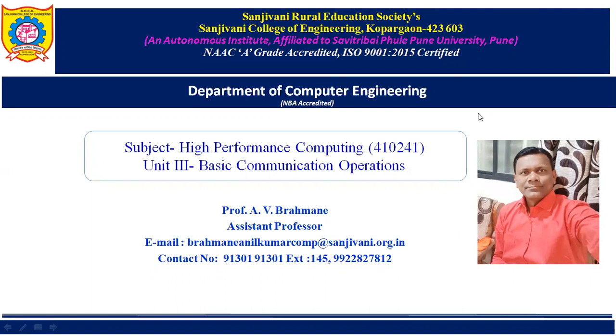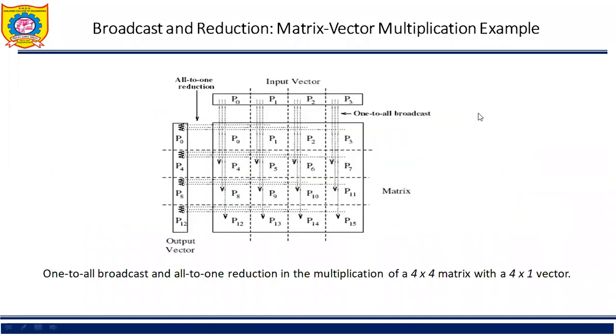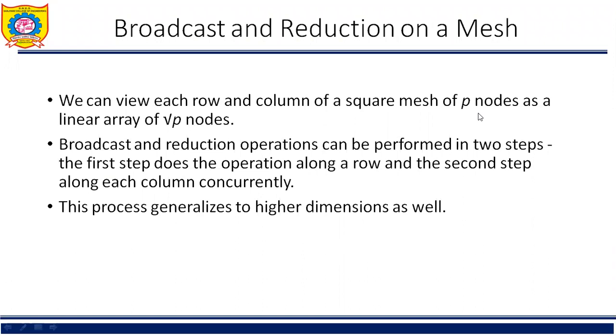Continuing the same broadcast and reduction for mesh, let me show you the example that we discussed in the previous video. We can view each row and column of a square mesh of p nodes as a linear array of root p nodes. Broadcast and reduction operations can be performed in two steps. The first step does the operation along a row and the second step along each column concurrently. This process generalizes to higher dimensions as well.